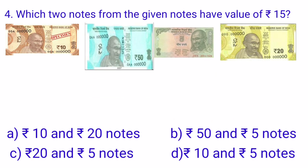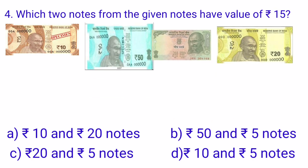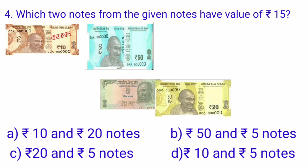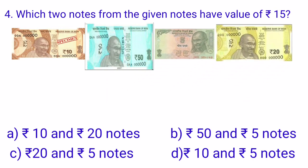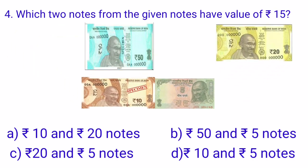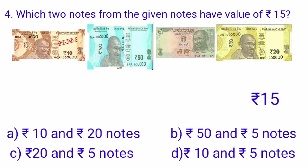We will move to option C. In option C, Rs. 20 and Rs. 5 are added to get Rs. 25 — this is again incorrect. In option D, Rs. 10 and Rs. 5 are added and we get Rs. 15, which is the correct option. So option D is the correct answer and we will put the tick mark there.